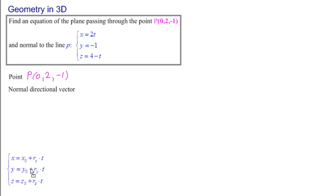We know that that line is in parametric form. So the directional vector for that line is rx, ry, rz. The coefficients of t are the components of the normal directional vector.